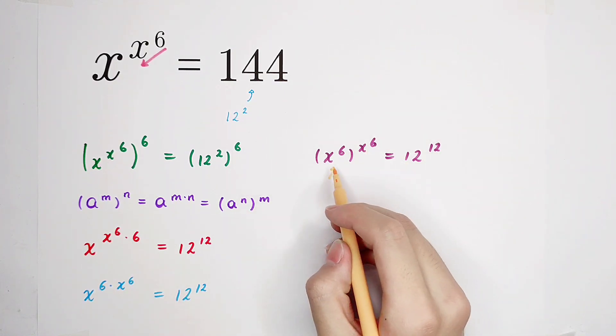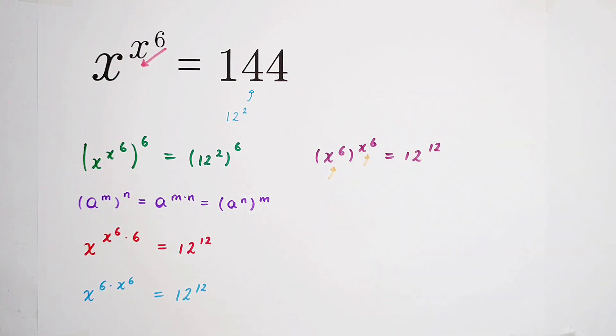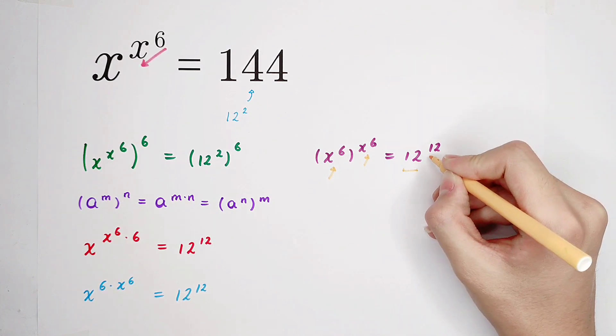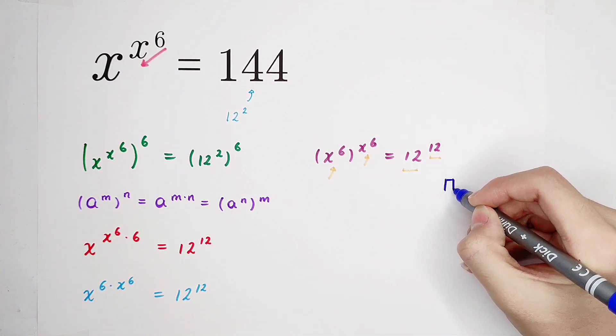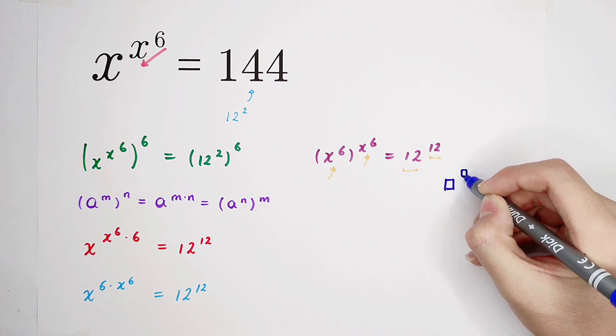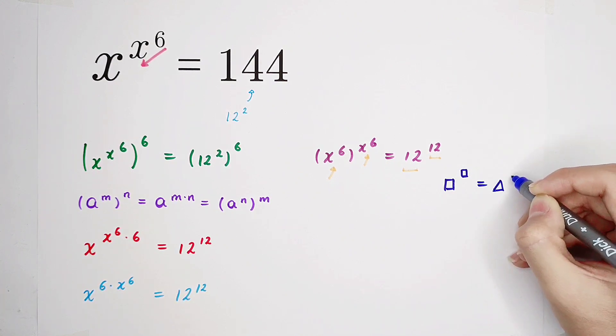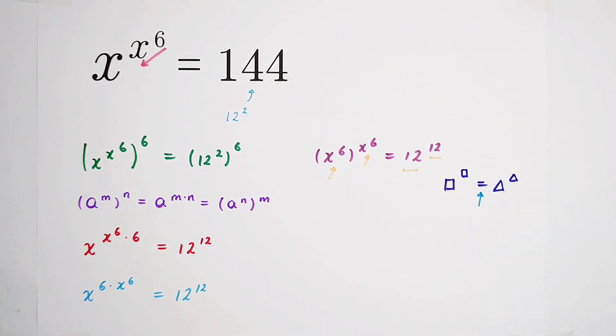For the left-hand side, x to the power of 6 is the base, and this one is the exponent. For the right-hand side, 12 is the base, and this 12 is the exponent. Our left-hand side and right-hand side have the same form. Something raised to the power of something equals something raised to the power of something. And they are equal, so what does it mean?